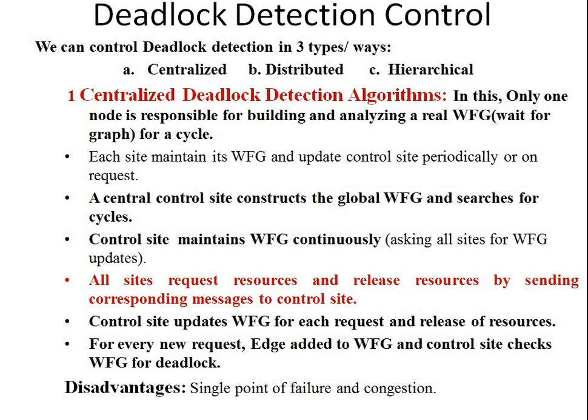Deadlock is detected when a cycle is found in the process graph — that is the meaning of periodic checking. The central control site means the coordinator or server constructs the WFG and searches for cycles, always looking after the cycles. The control site maintains the WFG continuously, asking all neighboring nodes.